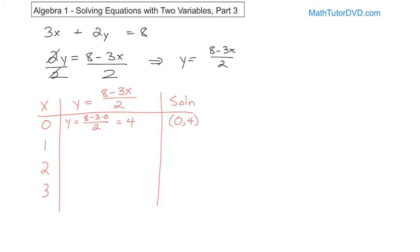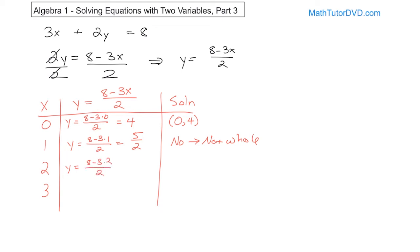What happens when x is equal to 1? y is equal to (8 minus 3 times 1) over 2. 8 minus 3 is 5, so we get 5 halves. Is this a whole number? 5 halves is a fraction — it's not a whole number. So we reject it as not whole. When x is equal to 2, y would be (8 minus 3 times 2) over 2. 3 times 2 is 6, 8 minus 6 is 2, and 2 over 2 is 1. That's a whole number, so (2, 1) is part of our solution.